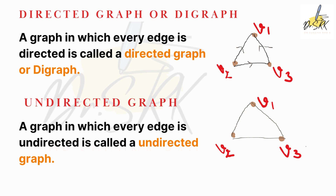What is an undirected graph? A graph in which every edge is undirected is called an undirected graph. Looking at the second diagram, the edges connect vertices V1, V2, and V3 by means of edges without arrow marks. That is why this graph is an undirected graph.